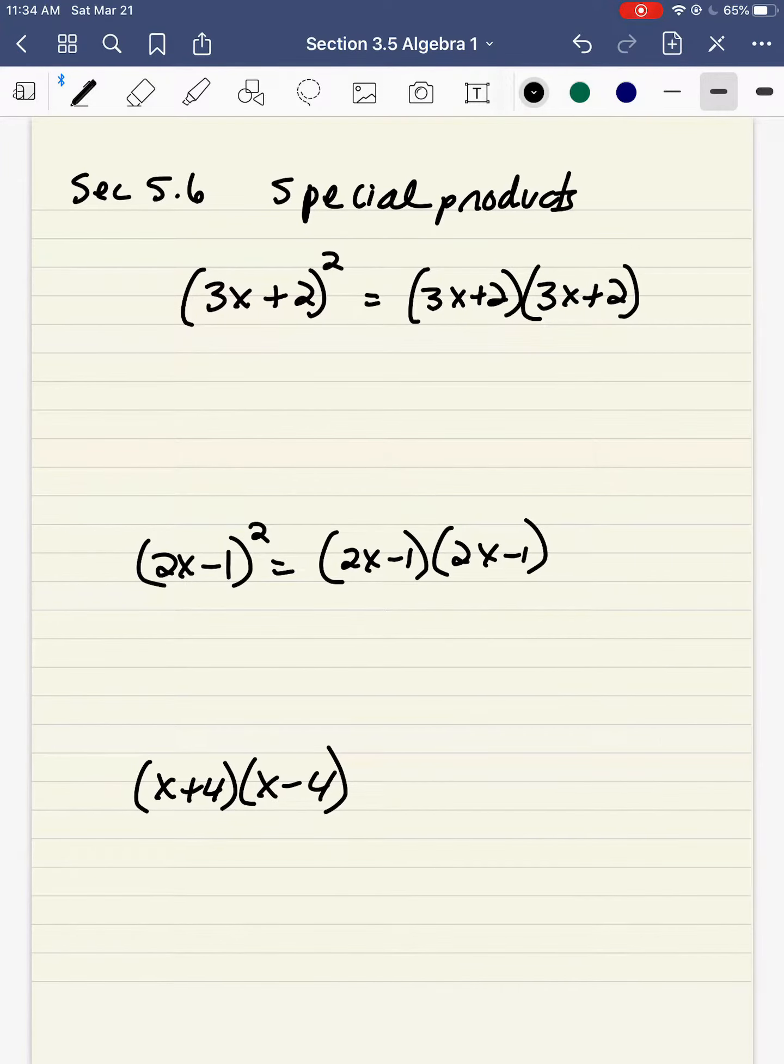Section 5.6, Special Products. If I have the terms 3x plus 2 in parentheses and it's squared, it means I'm going to take 3x plus 2 and multiply it by itself, 3x plus 2.